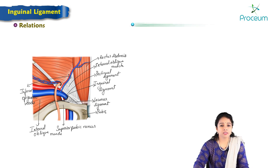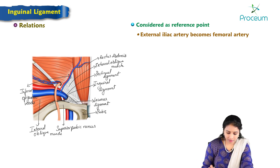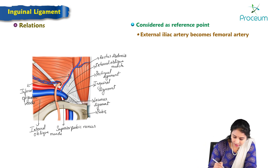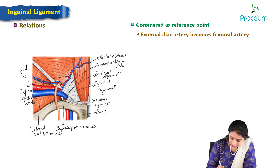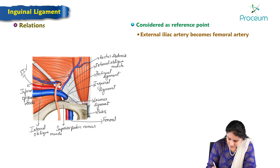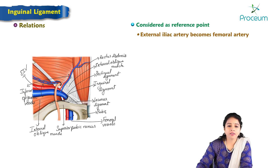The deep circumflex iliac artery is present on the lateral aspect of the inguinal ligament. The inguinal ligament is considered the reference point where the external iliac artery becomes the femoral artery. Here we can see the external iliac vessels continuing as the femoral vessels. These are the relations of the inguinal ligament.